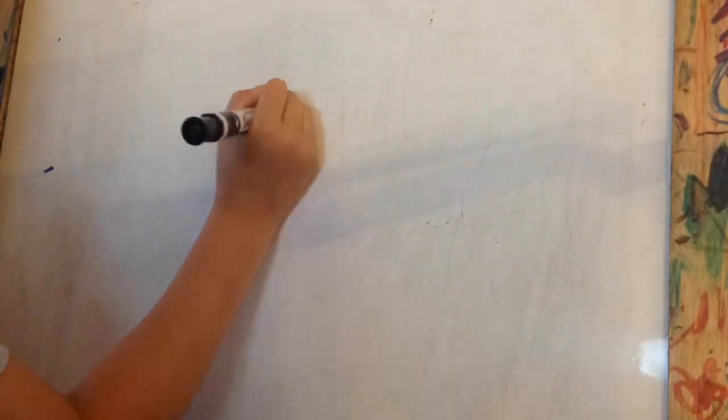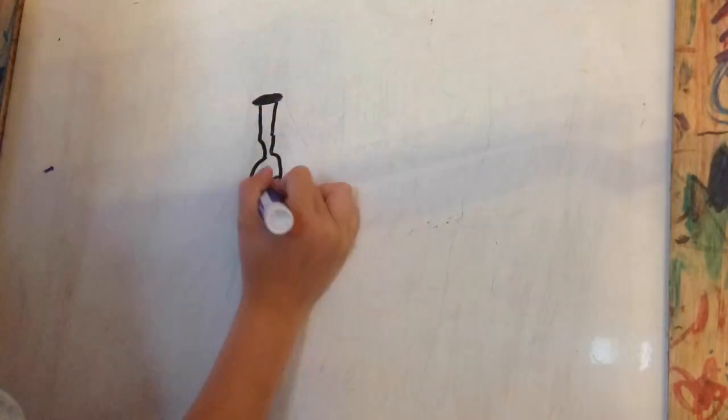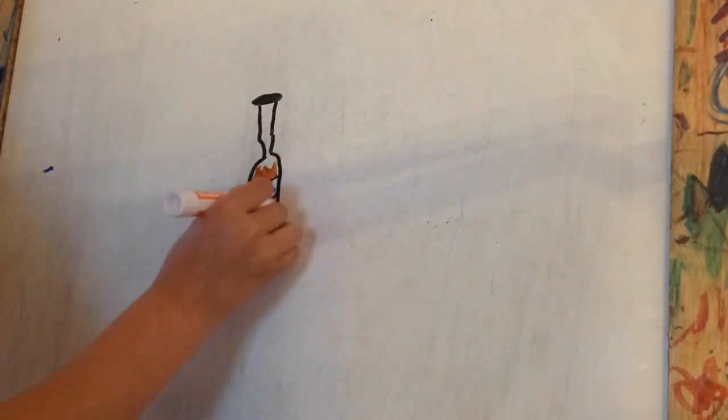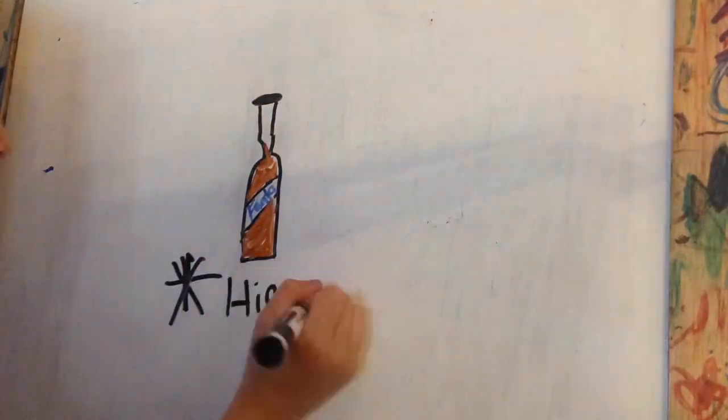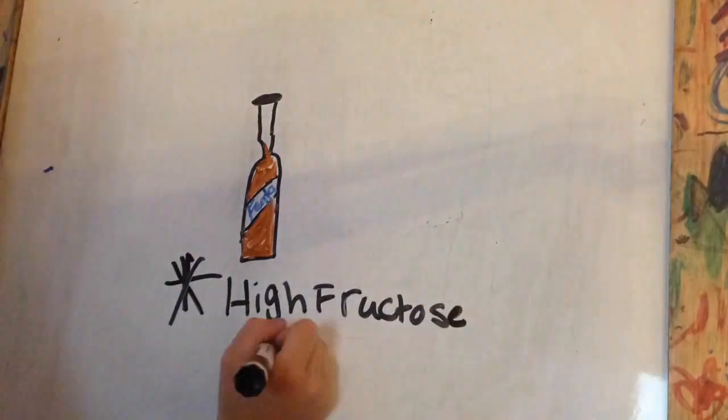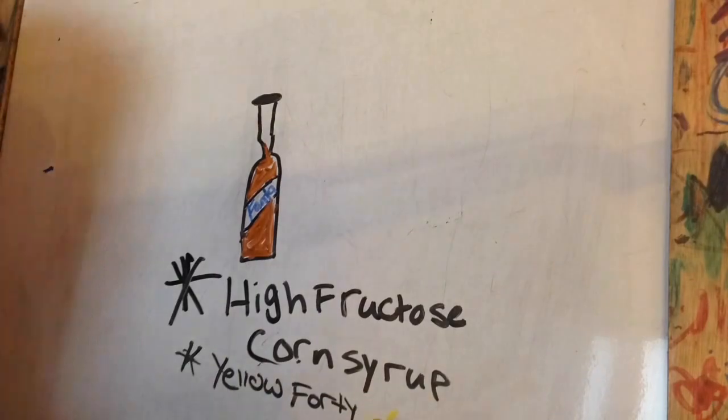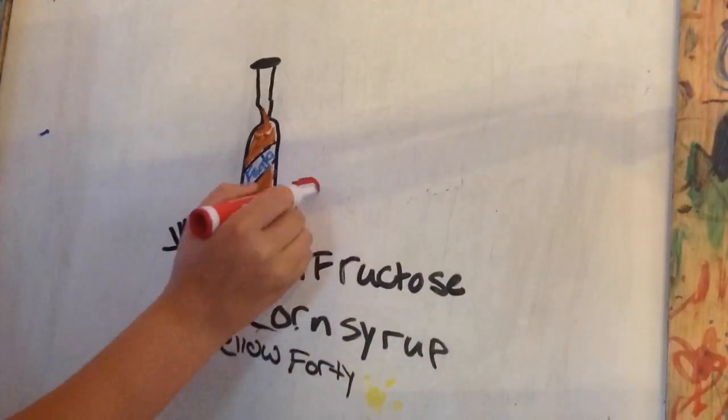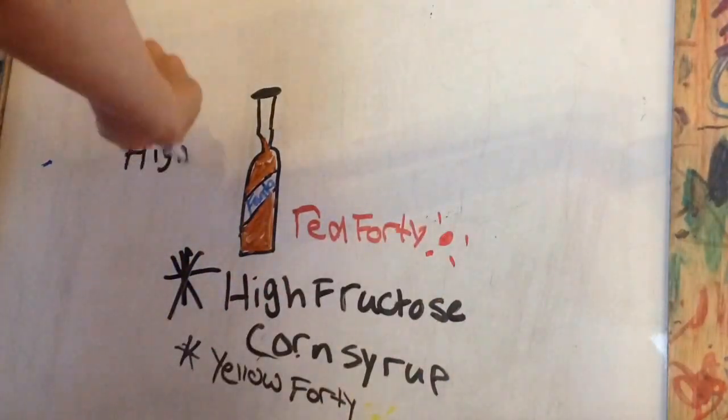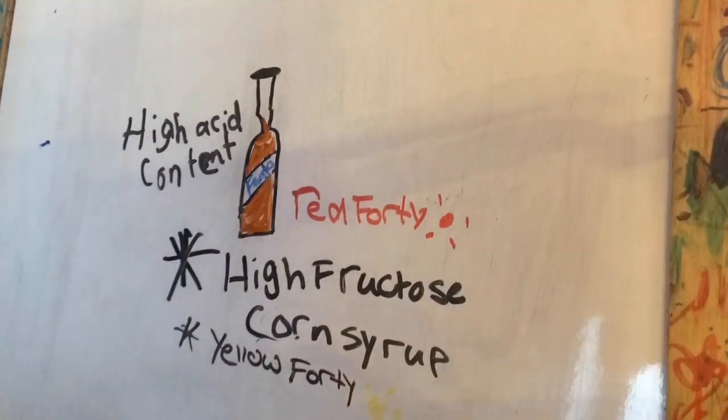Orange soda is a drink that lots of people love, but if they knew half of the nutritional effects, they might change their minds. For starters, it contains high-fructose corn syrup, which contributes to the sweet taste. It also has yellow 40 and red 40, which give it the orange color. The high acid content can erode the enamel on your teeth, but that's only if you drink it quite frequently.